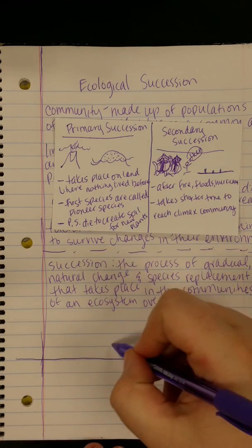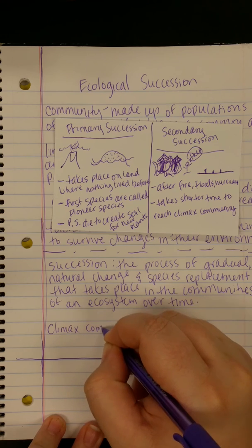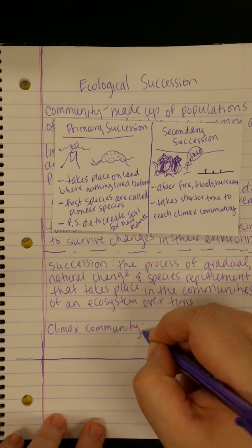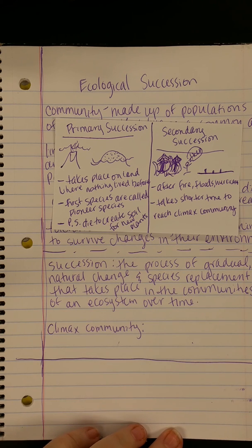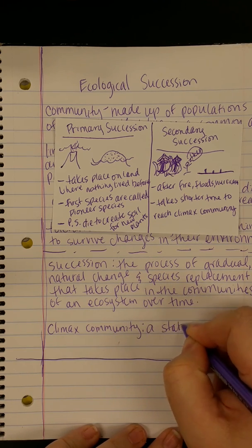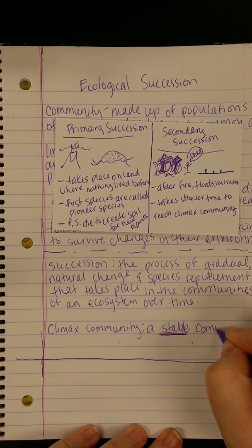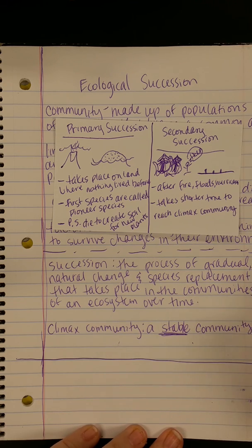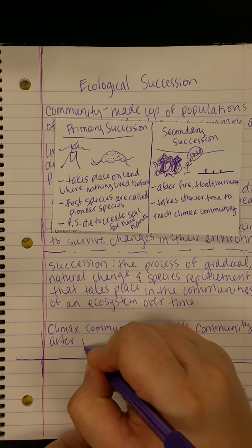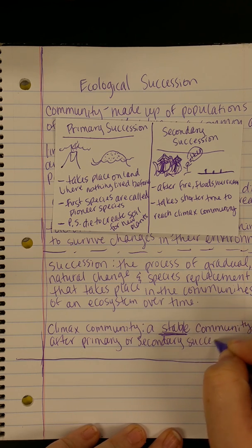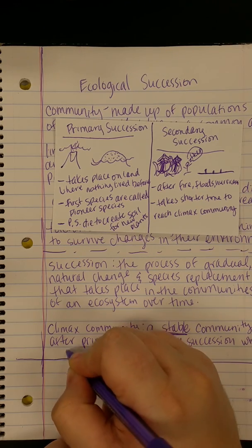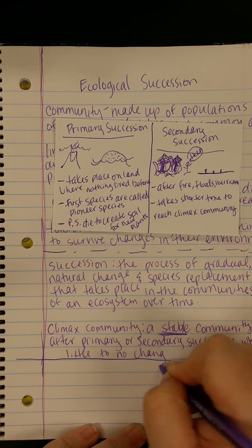Underneath succession on your notes, write climax community. When we say climax community, we mean climax as the highest point — somewhere that lots of things have grown for a long time and there's nothing new coming in. It's a very stable environment, usually where no people live because people are very disruptive. A climax community is a very stable community formed after primary or secondary succession where little to no change occurs.